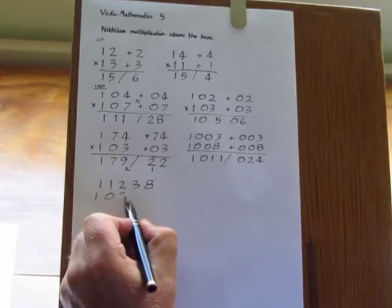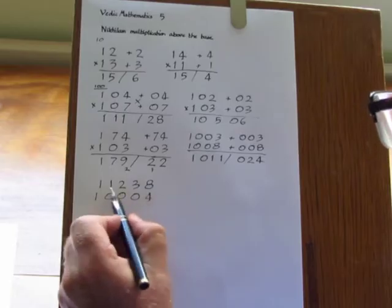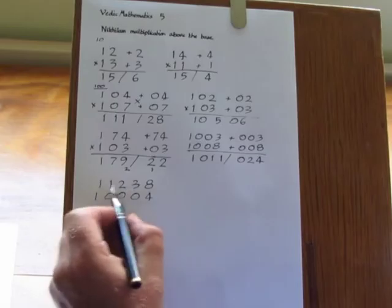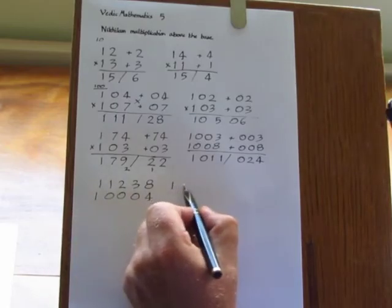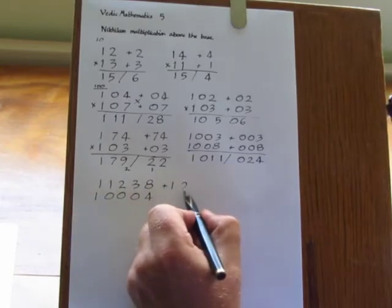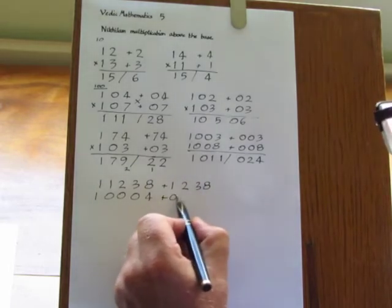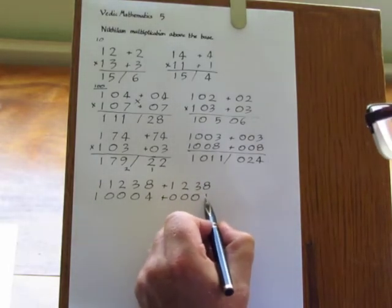So here for example we have 11238 multiplied by 10004. Write down the surpluses: 1238 and 0004.